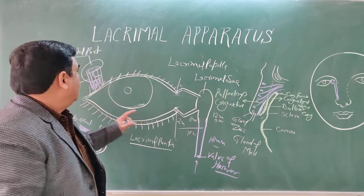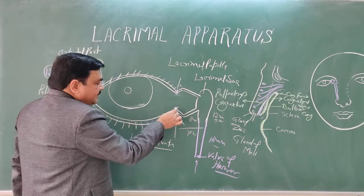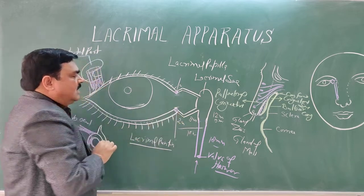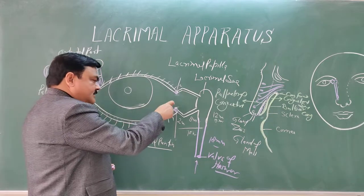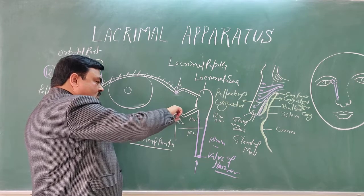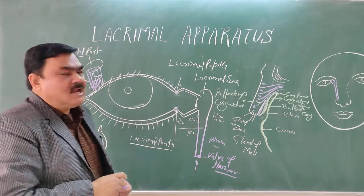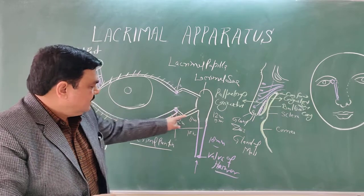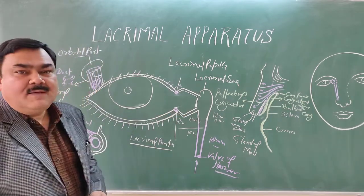So this is all about the lacrimal apparatus. Sometimes the punctum is closed, but this can be easily opened by the syringing procedure. A curved nasolacrimal probe is inserted here, and saline water is flushed. If there is any obstruction in this pathway, it can be cleared by this procedure.